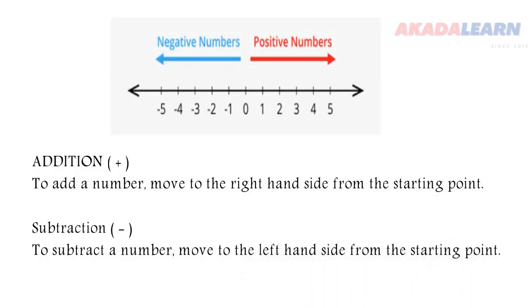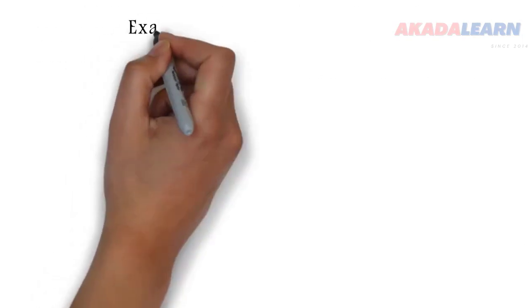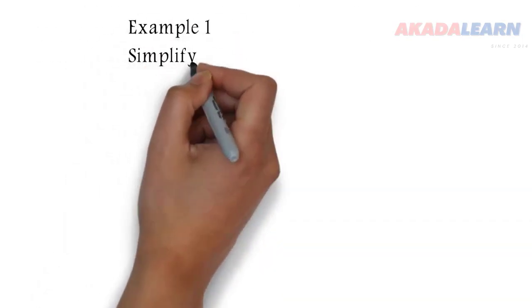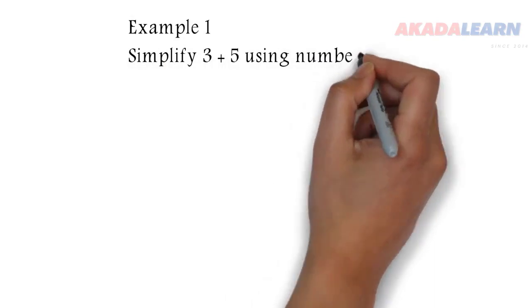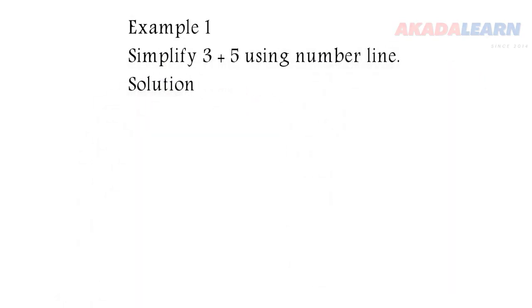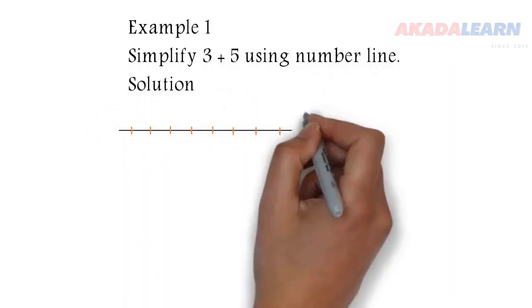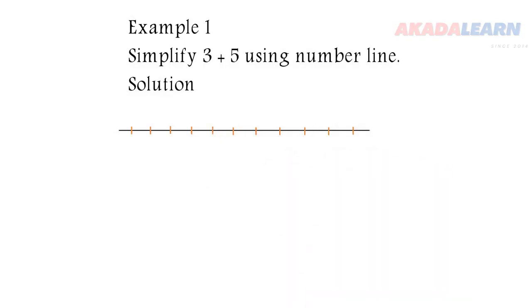An example will help us to understand this better. Example 1: we are asked to simplify 3 plus 5 using number line. The first thing we do is draw a number line and we number the lines.